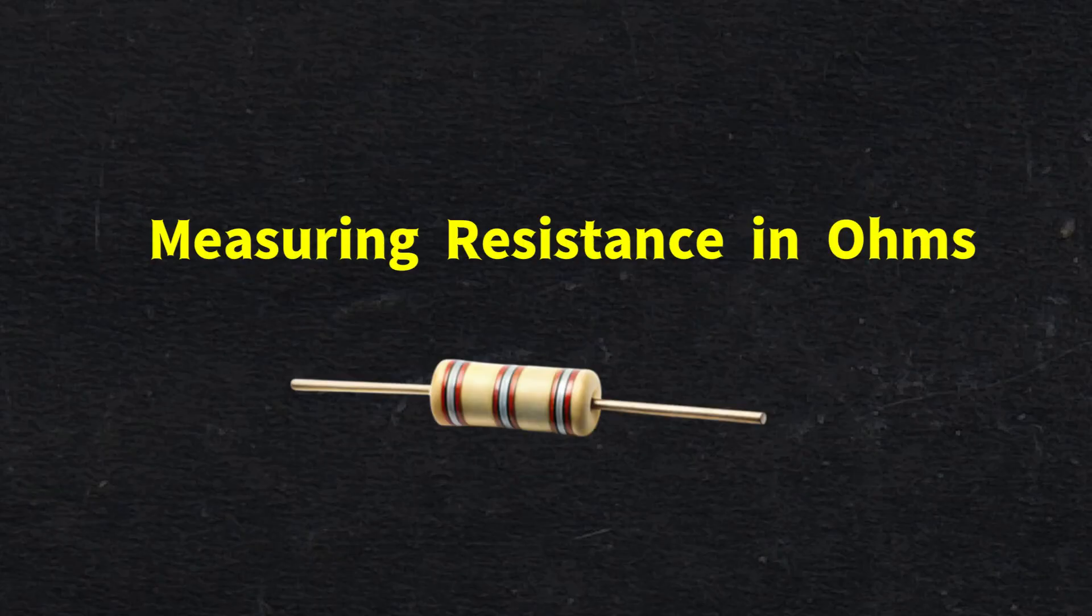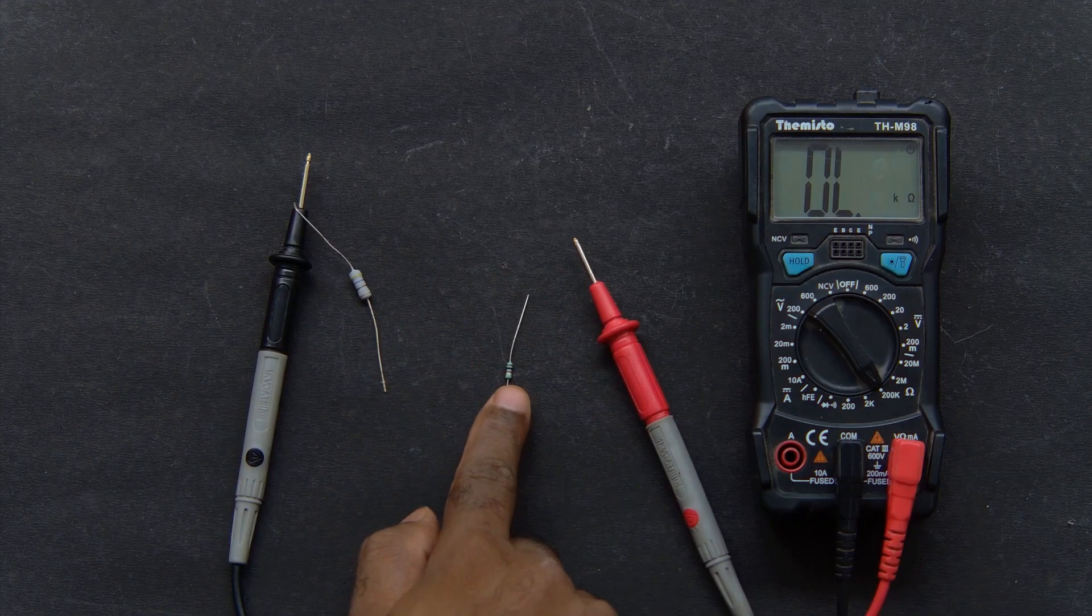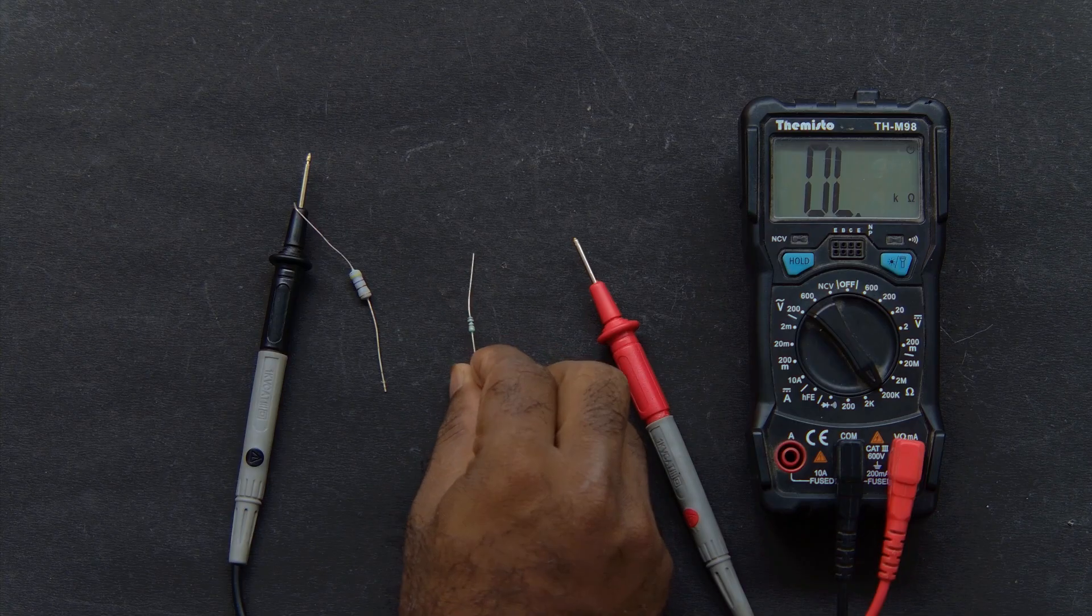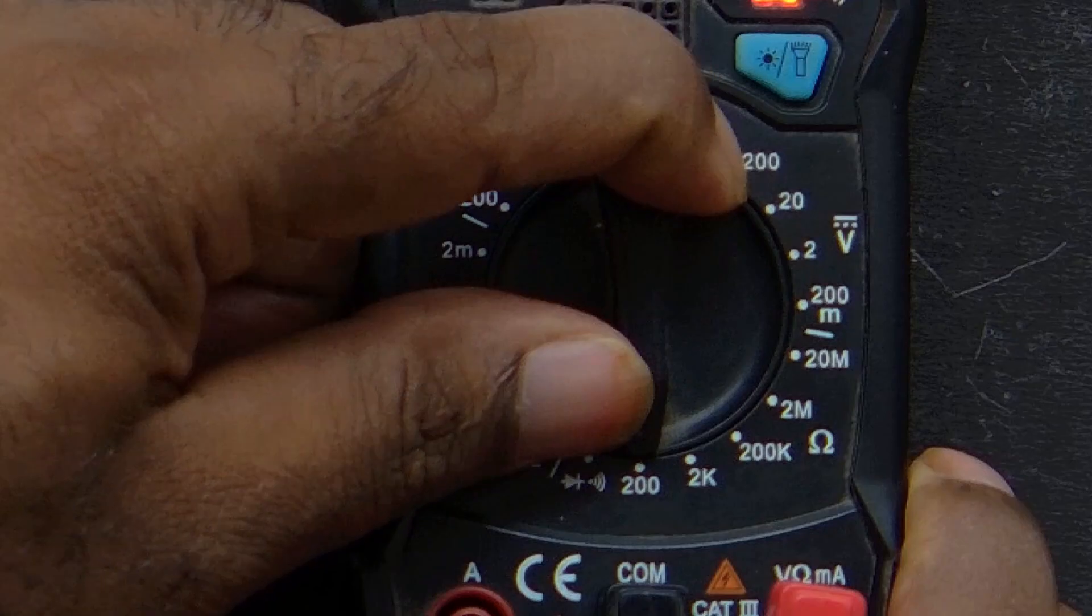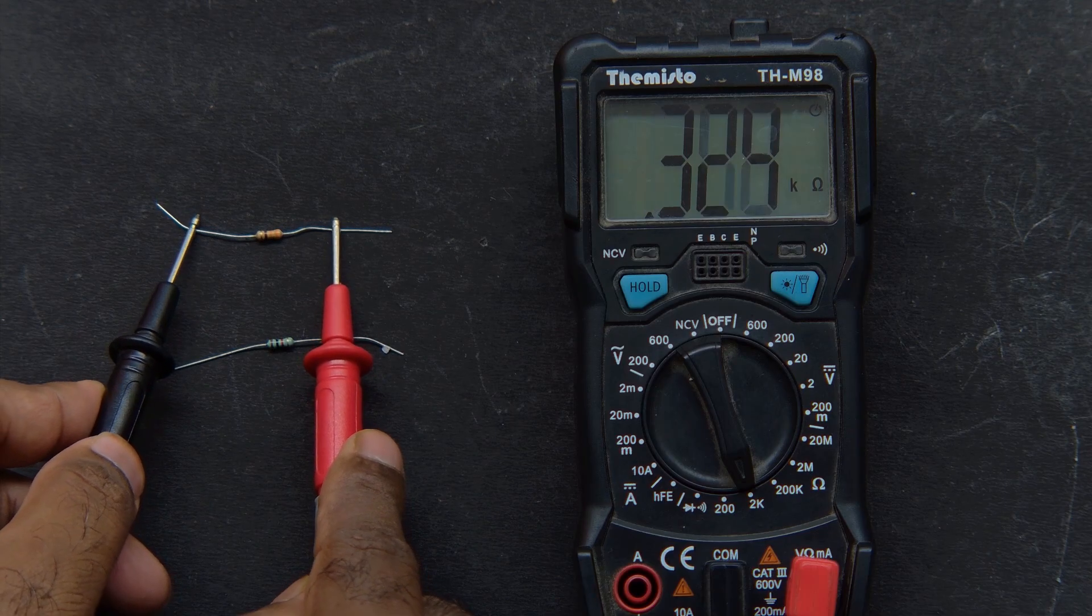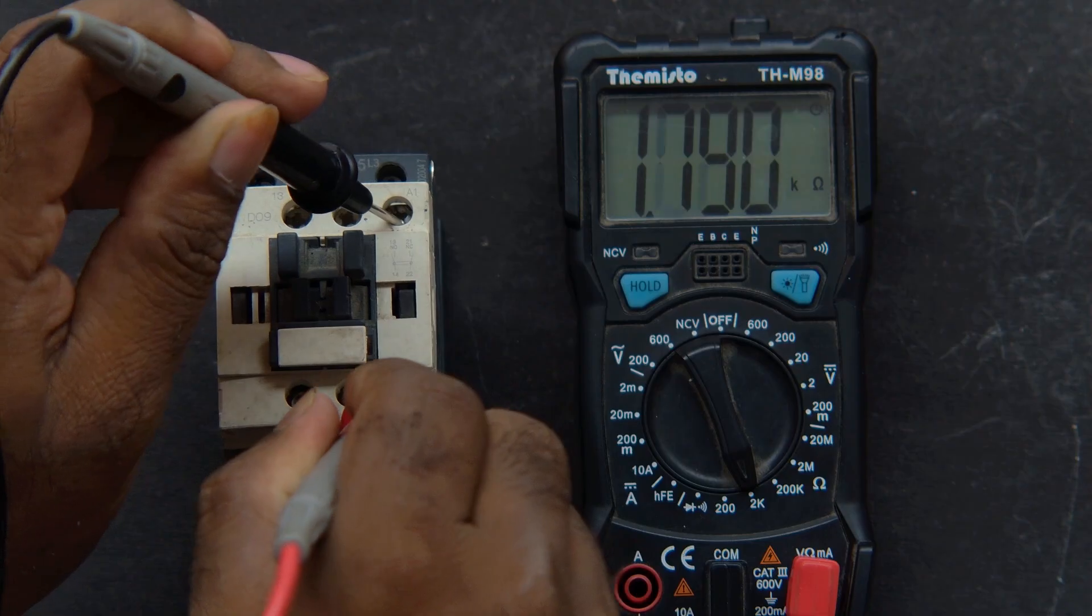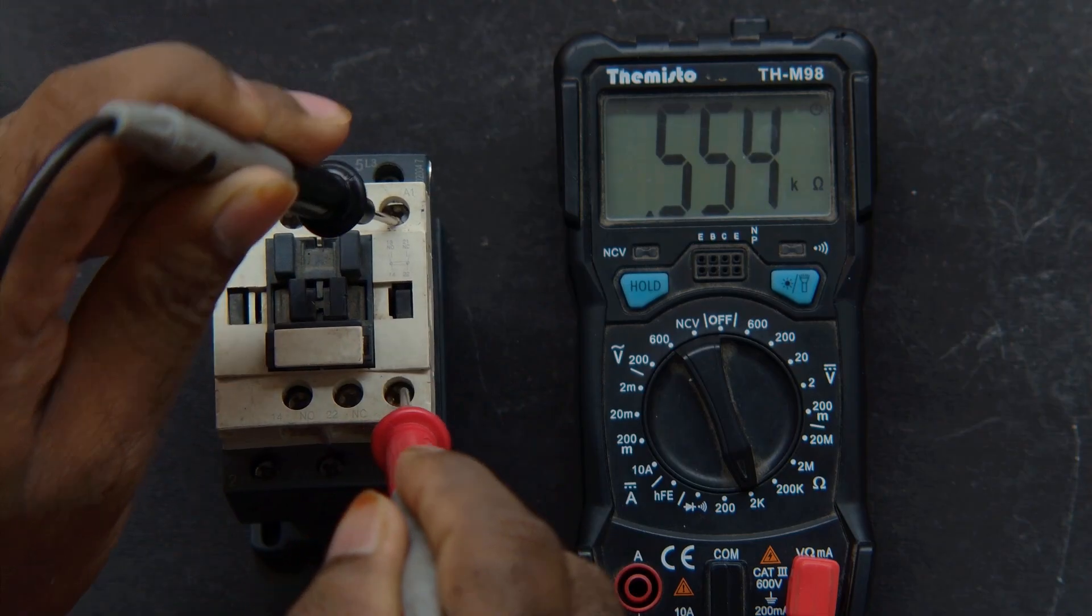Part six: measuring resistance in ohms. Closely related to continuity is resistance measured in ohms. This tells you how much the flow is being blocked. Turn the dial to the ohm symbol. Now place the probes across any resistor, wire, or coil. A very high or OL reading means the path is open or damaged.